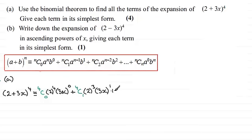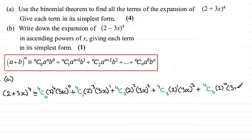So to this we add 4c2 and multiply it by 2 to the power 2 and then increase the 3x power by 1. So it was 3x to the power 1, it's now 3x to the power 2. And then we add 4c3, 2 to the power 1, and then 3x to the power 3. And for the last term we add 4c4, and then we've got 2 to the power 0 and 3x all to the power 4.